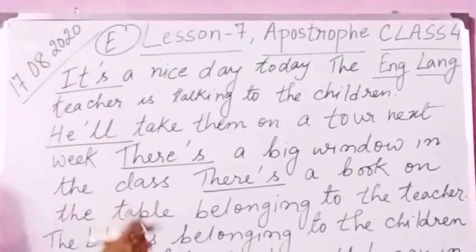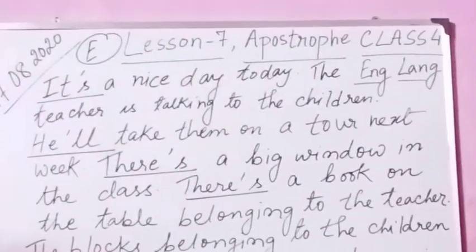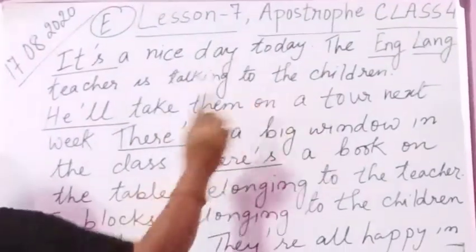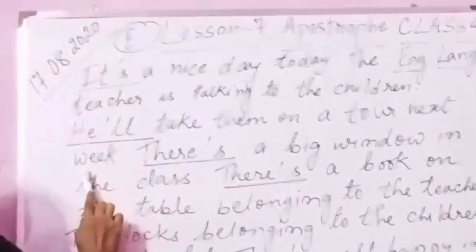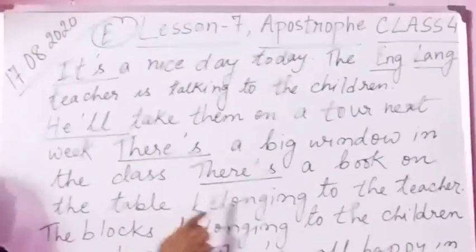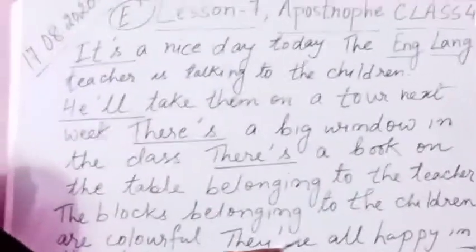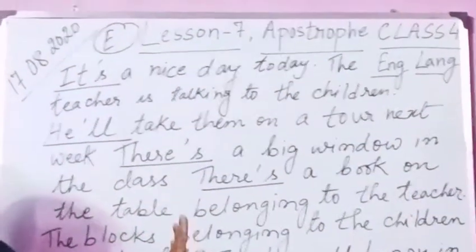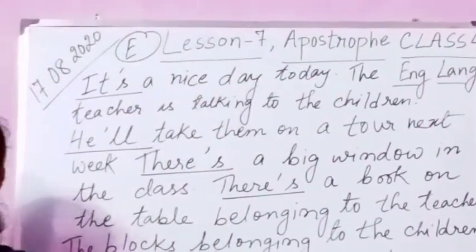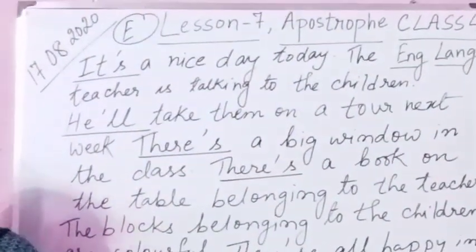We have completed this paragraph. Please see the full paragraph: it's a nice day today, the teacher is talking to the children, he'll take them on a tour next week, there's a big window in the class, there's a book on the table belonging to the teacher, the blocks belonging to the children are colorful, they're all happy in the class. Please underline the contracted short forms you have written and write in the copy. Children, thank you. Please do exercise E in your English language copy.